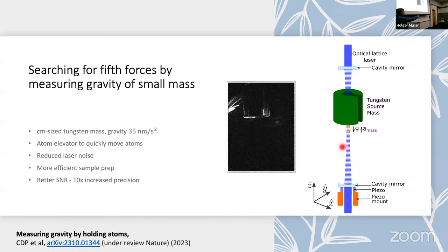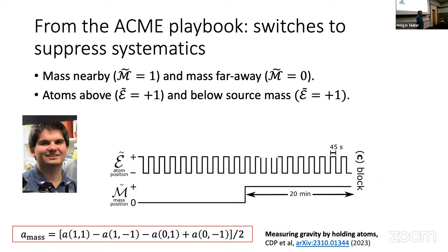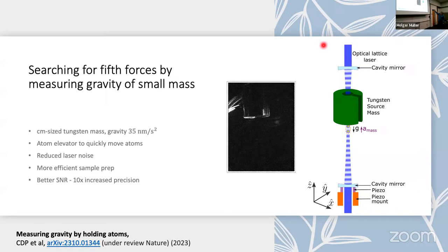The atoms can be positioned close to the source mass for a very long time and accumulate more and more signal instead of falling away. So it's a centimeter-sized tungsten mass. Its gravity is 35 nanometers per second squared at the optimum point. That's three parts per billion of Earth's gravity. So we're looking for a tiny effect here. We improved the setup further, but how do we deal with those systematics? And Chris Pander to the rescue, who has taken a page from the ACME playbook, installs switches to modulate your signal, but hopefully don't modulate your systematic effects. For example, moving the atoms from above the source mass to below should invert the wanted signal, but hopefully leaves the systematic effects more or less alone.